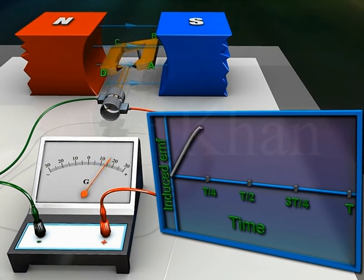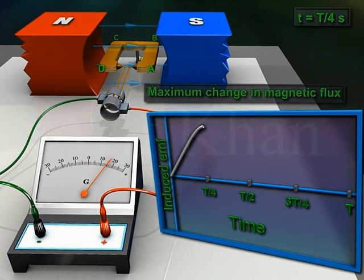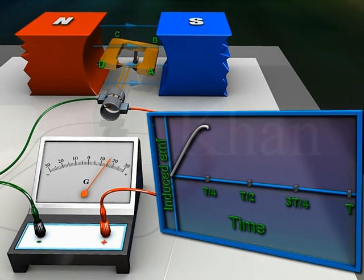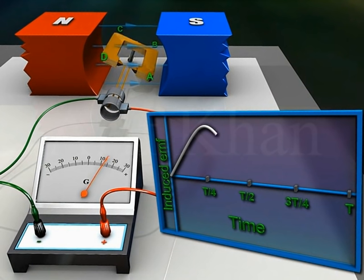During the first quarter rotation the induced EMF increases. At time t/4 seconds the armature becomes horizontal; at this position the rate of change of magnetic flux momentarily attains the maximum value, therefore the induced EMF is maximum. During the second quarter rotation, the induced EMF decreases.